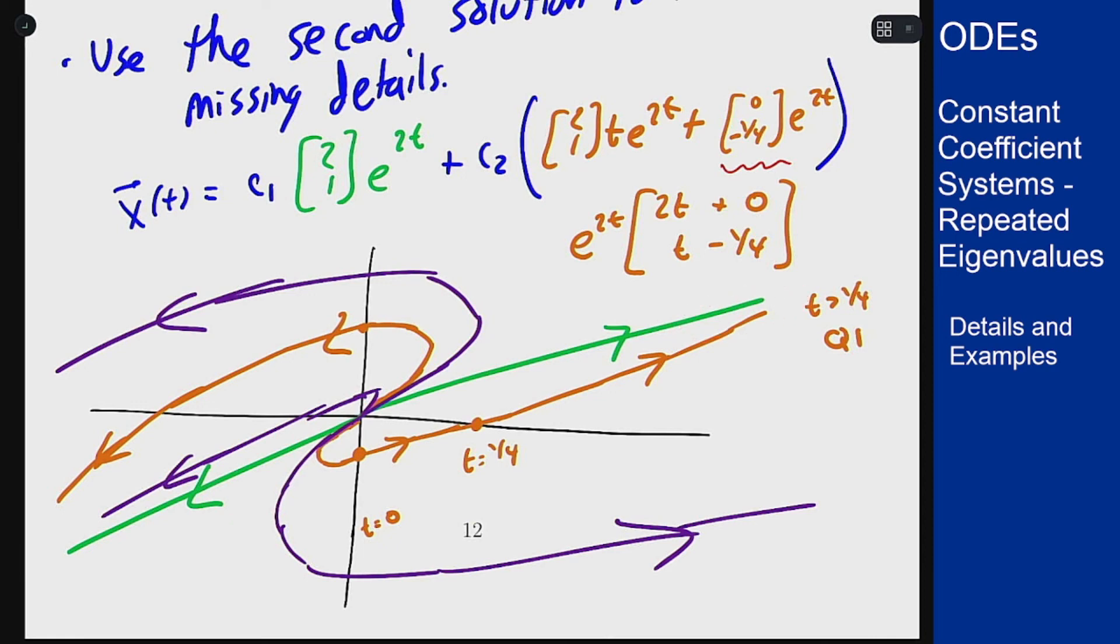So that is what you get for phase portraits for these repeated eigenvalue problems. You get your improper nodal sources and sinks based on if the eigenvalue is positive or negative.